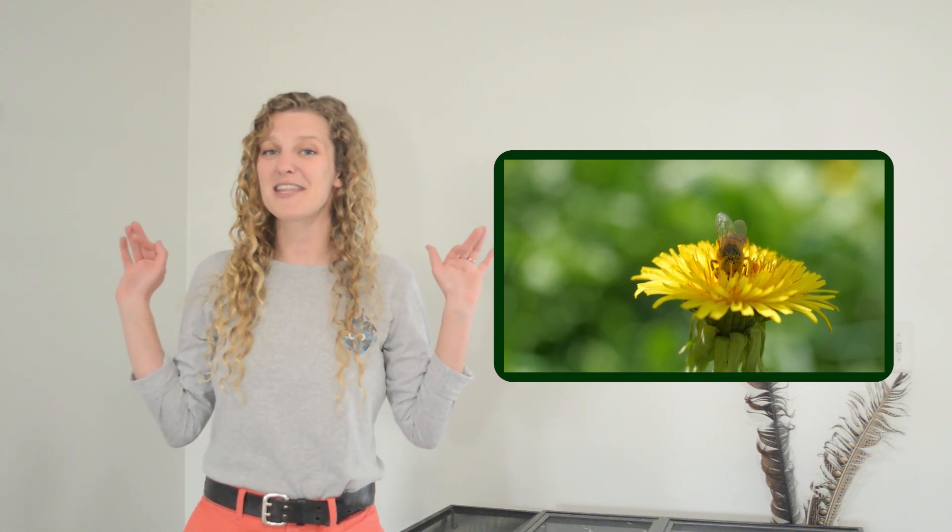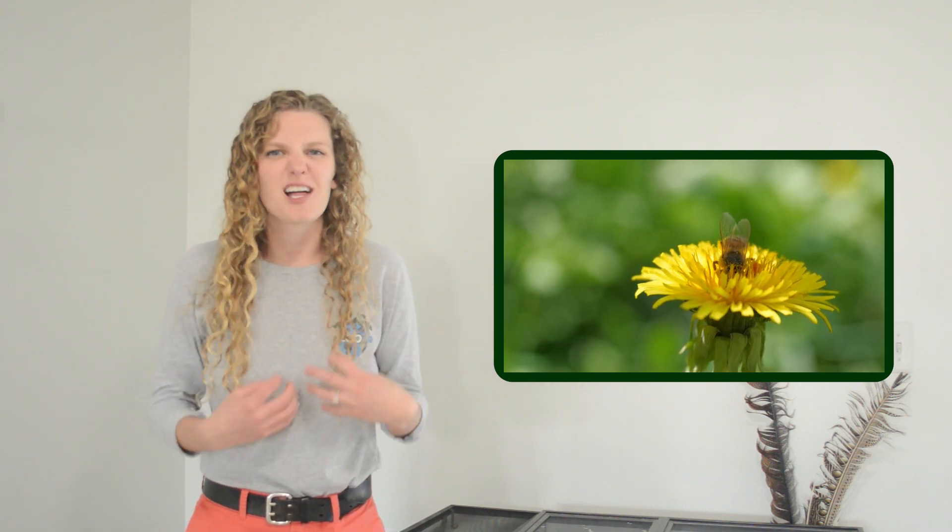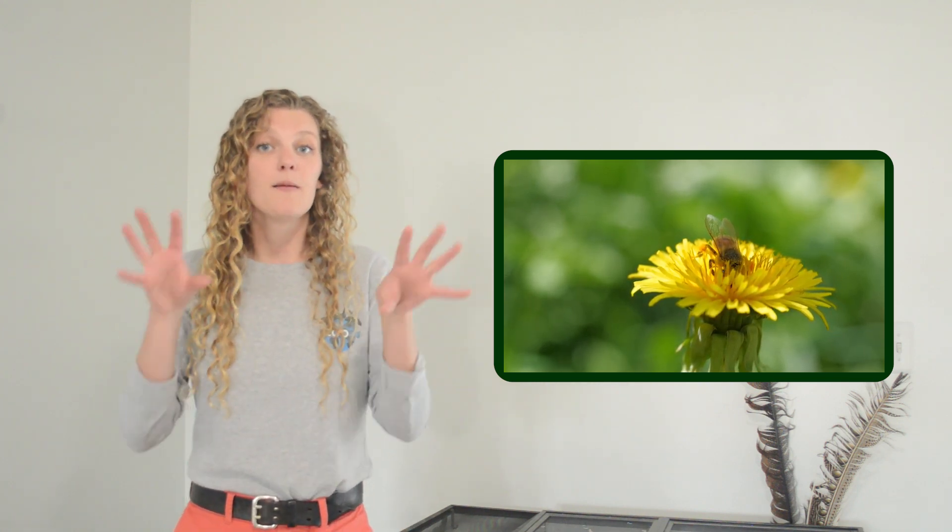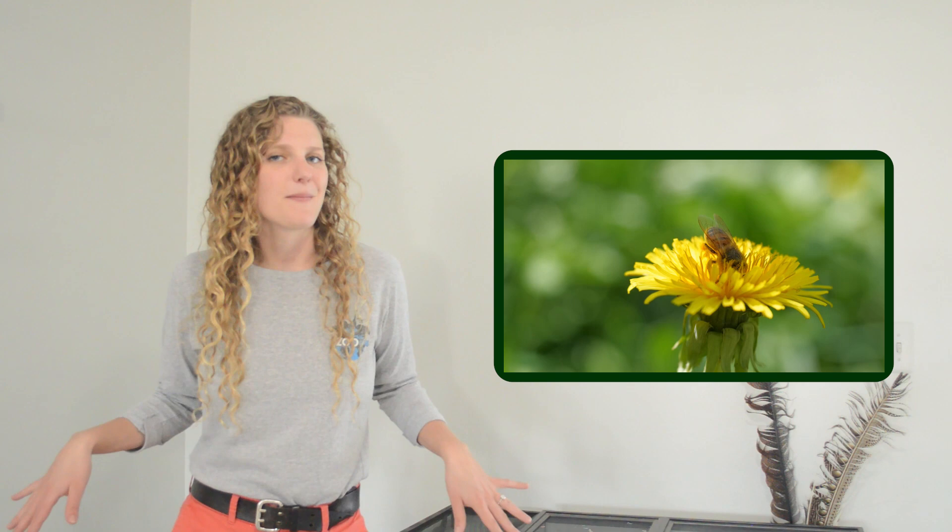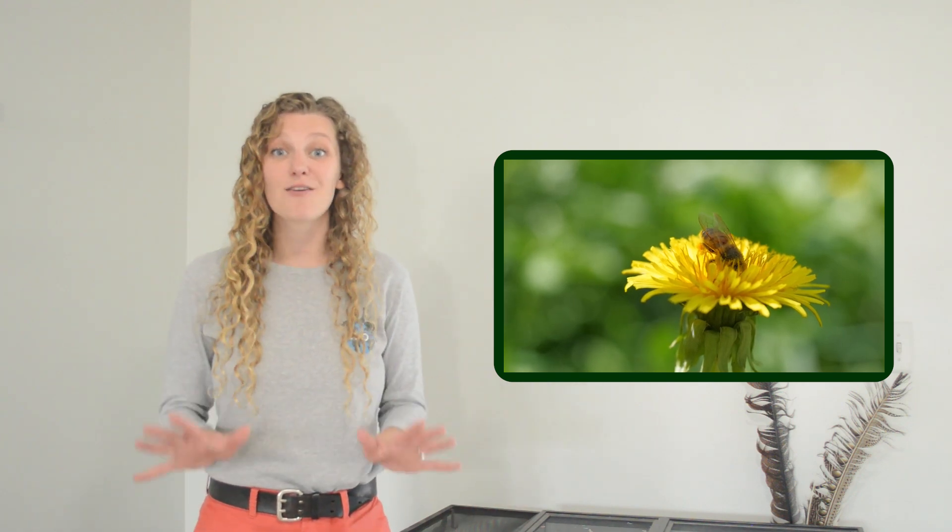As bees move from flower to flower looking for food, the setae, those little hairs that they have on their back, do a great job of collecting loose pollen, and as they move between flowers, they collect more, they drop some off, and that pollinates the flowers.